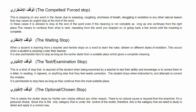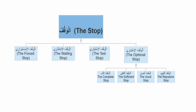The last one is al-waqf ikhtiari, the optional or chosen stop. This is where the reciter stops by his or her own choice without any other reason — there is no natural cause or request from the examiner. It is a personal choice, and this is the only category that is under the control of the reciter. This is the category that we need to study in detail and apply in a correct way. Waqf ikhtiari is further divided into four categories, and we will cover these four categories in our lesson insha'Allah.